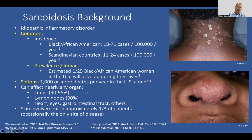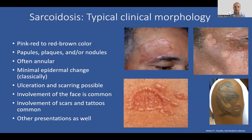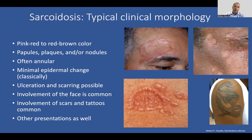Sarcoidosis can affect nearly any organ system. The lungs and the lymph nodes around the lungs are the most common, but the heart, eyes, GI tract, and other organs can also be involved. Skin involvement is not uncommon — one in three patients can have sarcoidosis in their skin, and occasionally this is the only site of disease. Sarcoidosis presents as pink-red to red-brown papules, plaques, or nodules — often annular. Classically there's no or minimal epidermal change, but this isn't always the case. Ulceration and scarring are possible, and involvement of the face is common. Scars and tattoos can also be commonly involved for reasons we don't fully understand.